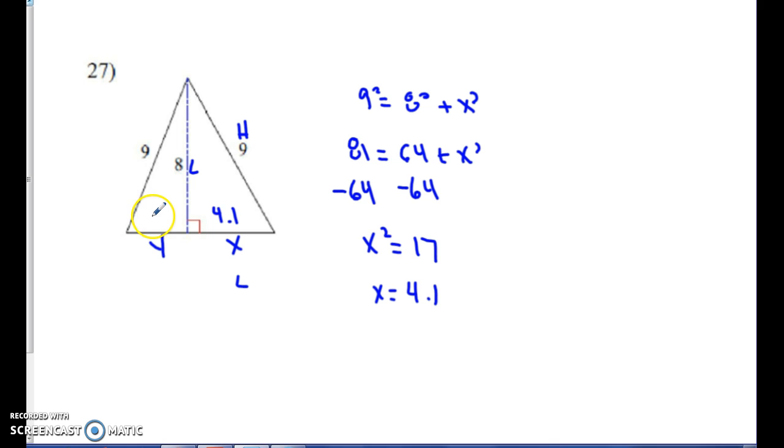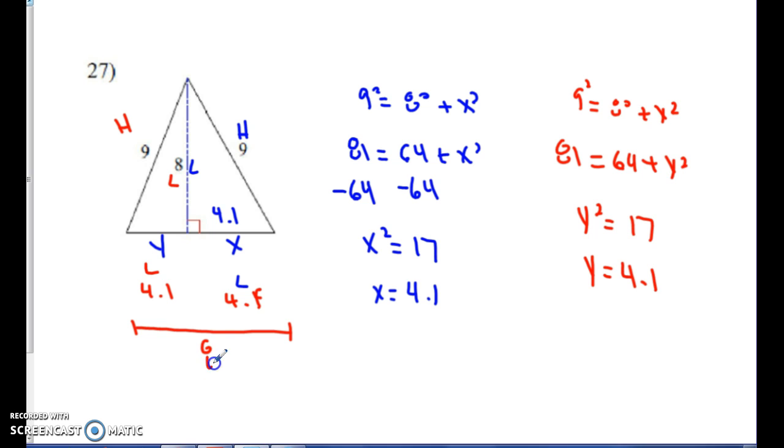To find out this one, I would do exactly the same thing. But in this case, let's do that just to see what happens. In this case right here, this is my hypotenuse. This is a leg, and that's a leg, too. So it's going to seem like it's going to be exactly the same. 9 squared equals 8 squared plus y squared. So I have 81 equals 64 plus y squared. y squared gets me 17. y gets me 4.1 again. So I know this is 4.1. This is 4.1. So that means this whole entire length is 8.2.